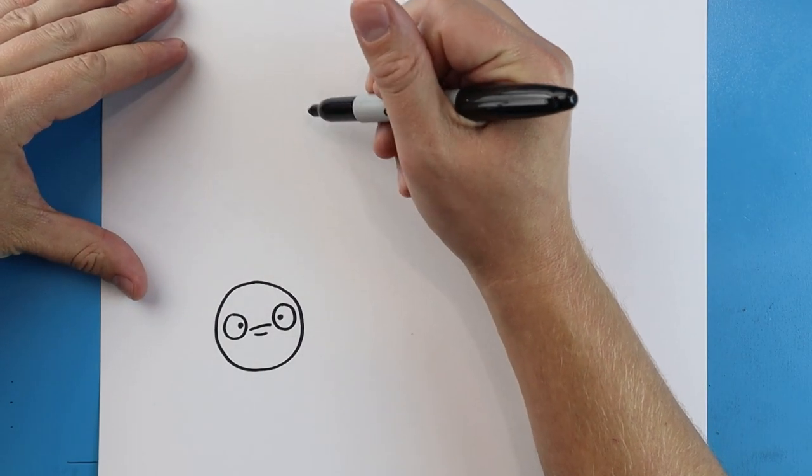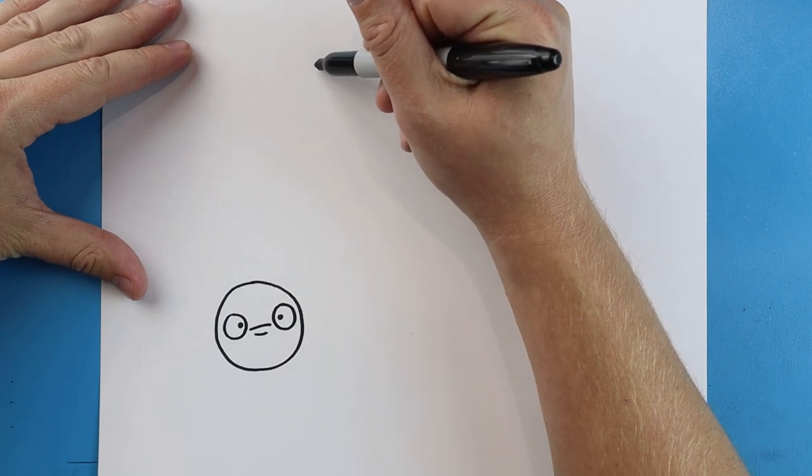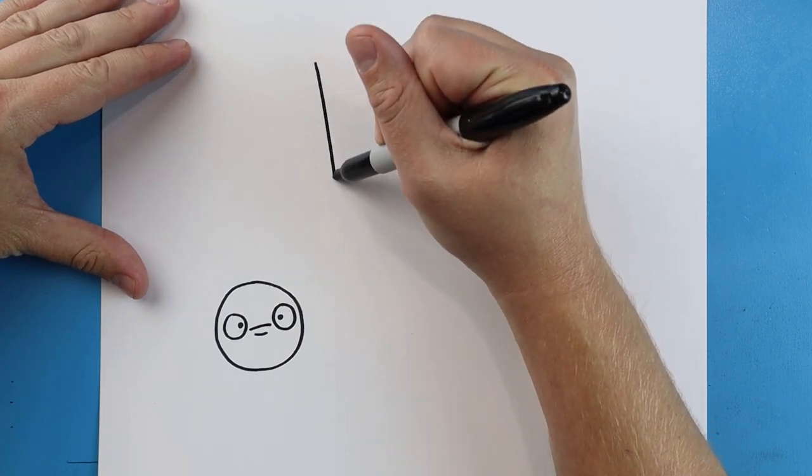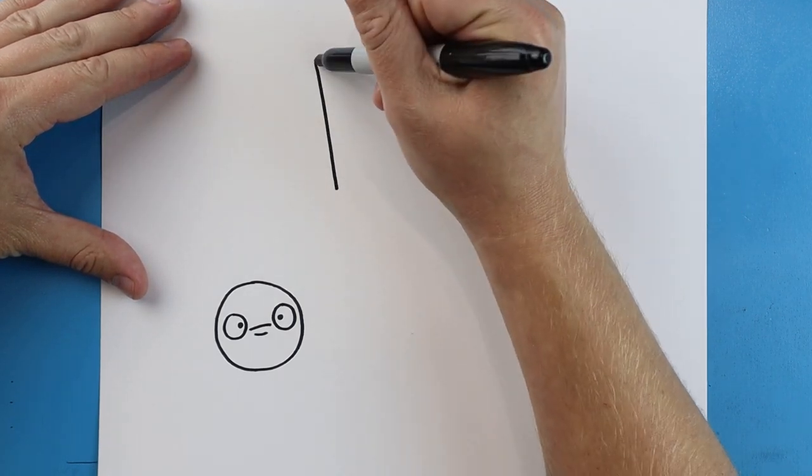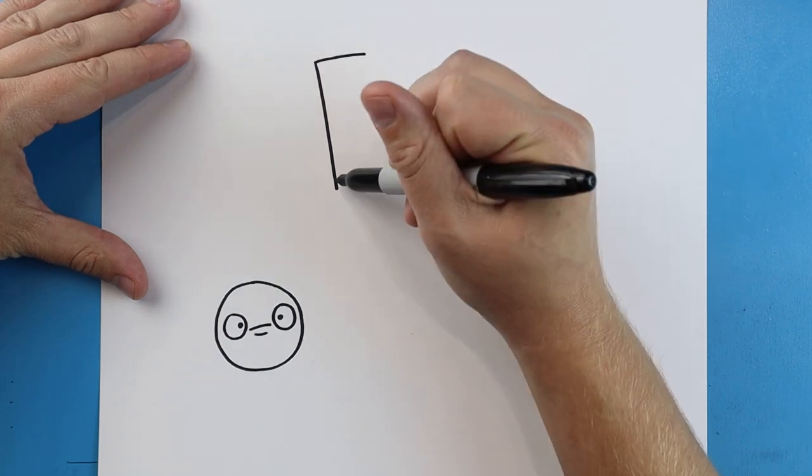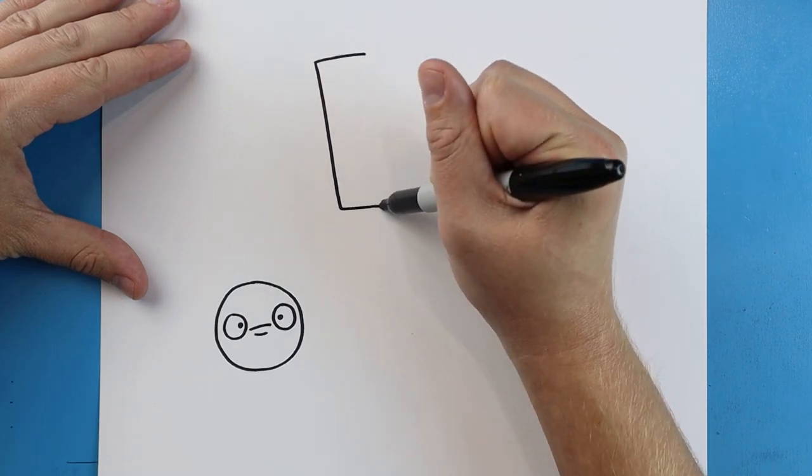Now over here I want to put an exclamation point. So to draw that I'm just going to draw a line that comes down. We'll make a line that comes across, and another one that comes across the bottom.